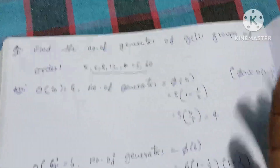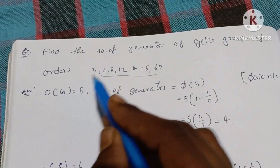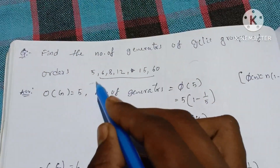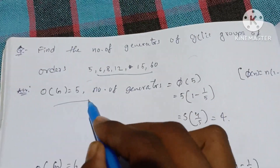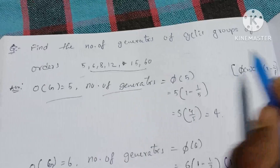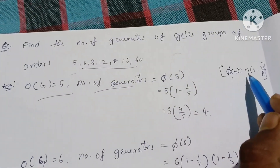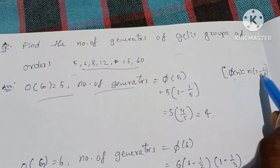If you want to see how many generators of cyclic groups of orders, first I will show you. The order of G is equal to 5. The number of generators is equal to the formula: φ(N) = N into 1 minus 1 by P.